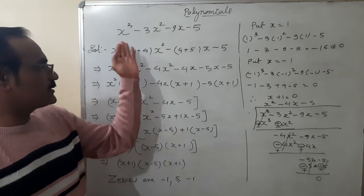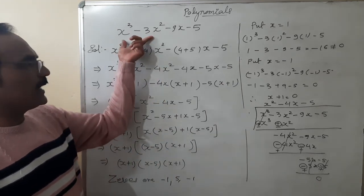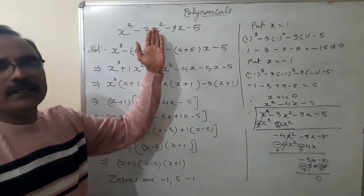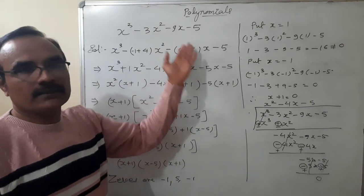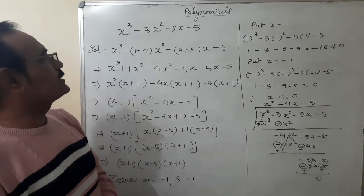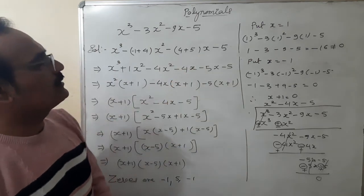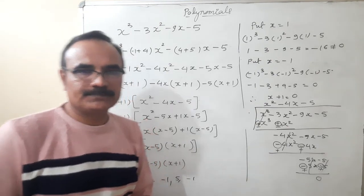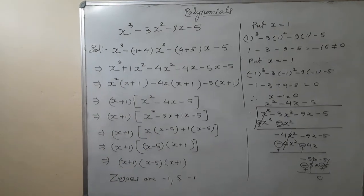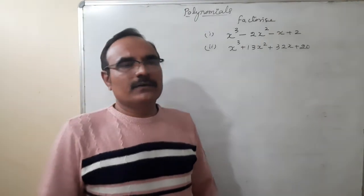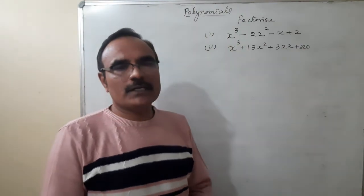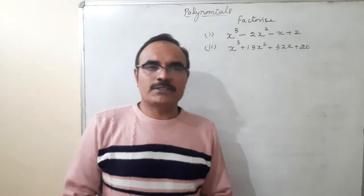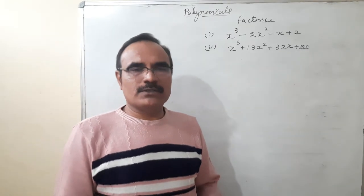One more thing: if the question is such that you can directly take common from the first two terms and last two terms and get the same expression in brackets, simply take common and solve it. Otherwise use the splitting method I showed. If it is very difficult, use the trial and error method — that is a solution for each and every type of question. There are two practice questions here on factorizing cubic polynomials. You can use whichever method you want — trial and error or the splitting method. Please keep practising.